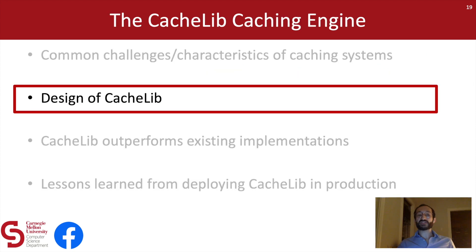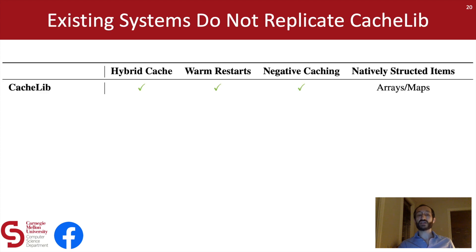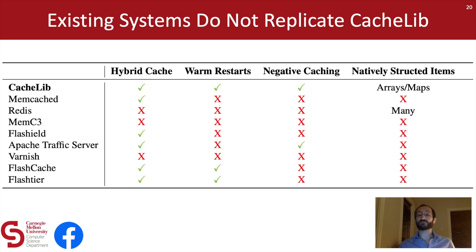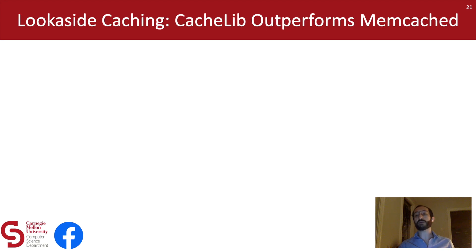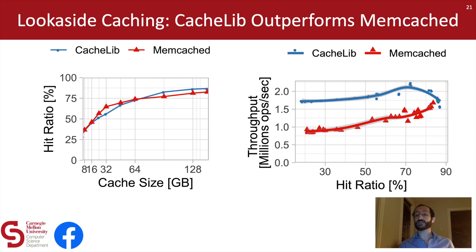Now that you've seen a little about the design of CacheLib, the question remains as to whether or not CacheLib can outperform the kinds of existing implementations it was designed to replace. For starters, if we look at a set of current popular cache systems, we can see that no single other system provides the same feature set as CacheLib. But we want to go a step further. So we compared CacheLib's DRAM cache to Memcached using production data from Facebook's look-aside caching system. For a given cache size, CacheLib achieves very comparable hit ratios to Memcached, but CacheLib achieves much higher throughput for a wide range of hit ratios.